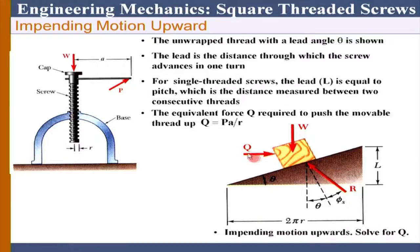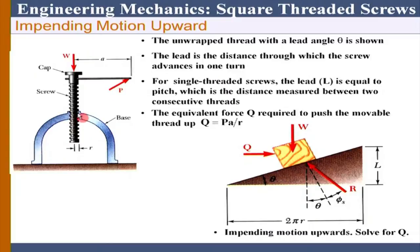For impending motion upward, this is the free body diagram. For a given W, we find Q, and from Q we determine the force P applied on the handle. We are trying to determine what force is required such that there is no slippage at the threads when raising the load.